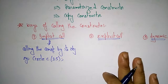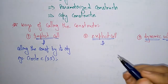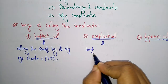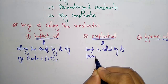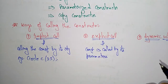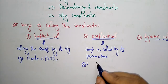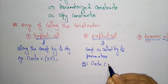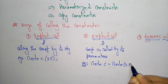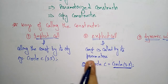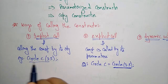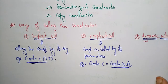Now let us see the explicit call. In explicit call, the constructor is called by its parameters. The example for explicit call is: `circle c = circle(3.5)` — here the constructor is called by its parameters, so you call it an explicit call.